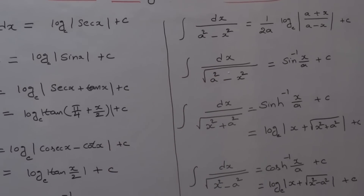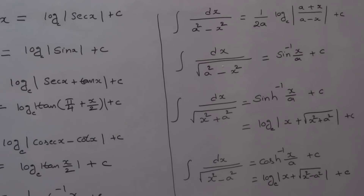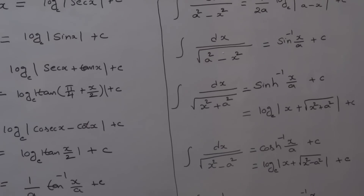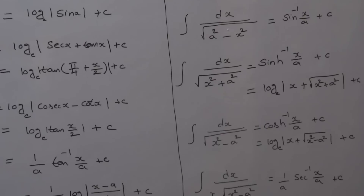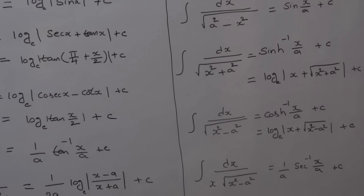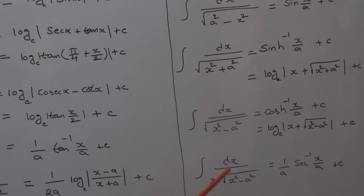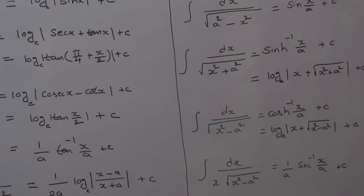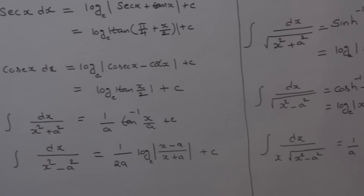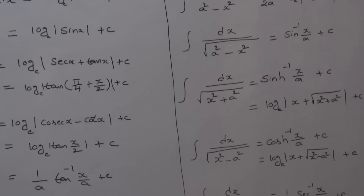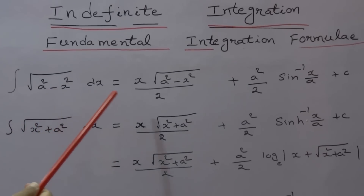Integral of dx by root of (a² - x²) is equal to sin⁻¹(x/a) plus c. Integral of dx by root of (x² + a²) is equal to sinh⁻¹(x/a) plus c, or log of |x + √(x² + a²)| plus c. Integral of dx by root of (x² - a²) is equal to cosh⁻¹(x/a) plus c, or log of |x + √(x² - a²)| plus c. Integral of dx by [x · √(x² - a²)] is equal to (1/a) sec⁻¹(x/a) plus c.